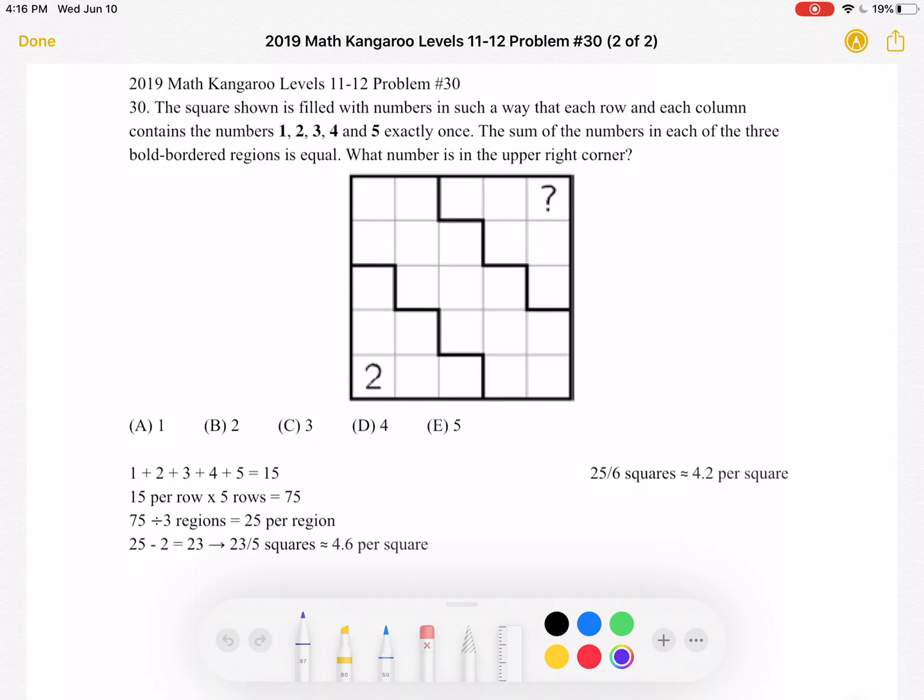To start, the problem tells us that each row and each column contains the numbers 1, 2, 3, 4, and 5 exactly once. The sum of those five numbers is 15. We know that each row has those five numbers, so if we have 15 per row and the entire square has five rows, the sum of all the numbers in the square must be equal to 75.